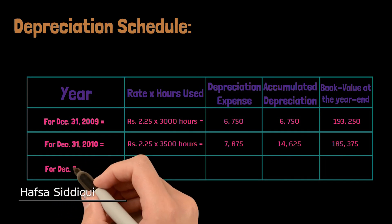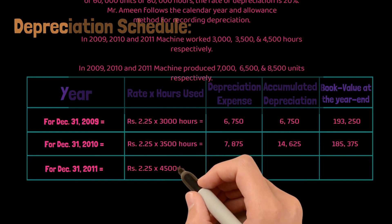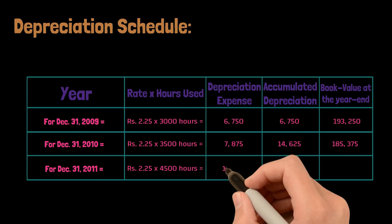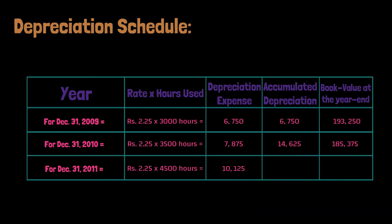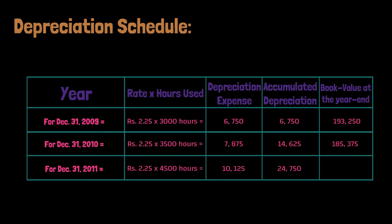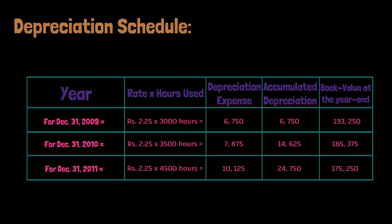For December 31st, 2011: the machine was used for 4,500 hours. At Rs. 2.25 per hour, the depreciation expense is Rs. 10,125. Adding to the previous accumulated depreciation gives Rs. 24,750. Subtracting Rs. 10,125 from Rs. 1,85,375, the book value in 2011 is Rs. 1,75,250.